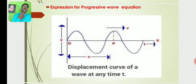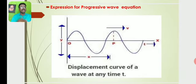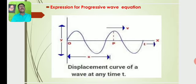Now we will discuss the derivation of the progressive wave equation. Considering the diagram, where the wave propagates along the X-axis, let Y be the displacement of the particles along the Y-axis. The progressive wave propagates along the X-axis with velocity V, where O is the point of origin of the disturbance. Let P be an arbitrary point along the propagation of the wave at a distance X from the point O, as shown in the diagram.